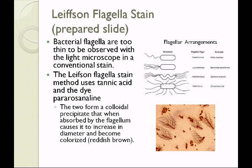There are several flagellar arrangements. A single flagellum at one end is called monotrichous — Vibrio cholerae is a monotrichous, vibrio-shaped organism. A tuft of flagella is called a lophotrichous arrangement; the tuft may be at one or both ends. A single flagellum or tuft at both ends is called amphitrichous — Spirillum serpens is both amphitrichous and lophotrichous. When flagella surround the entire perimeter of the bacterium, this is called peritrichous, as seen in Escherichia coli and Proteus vulgaris.